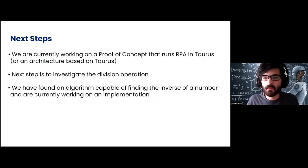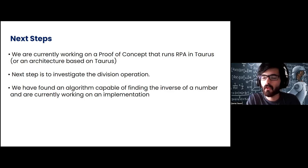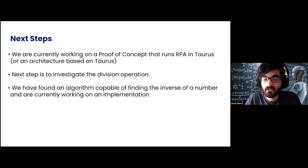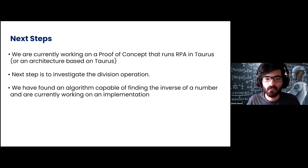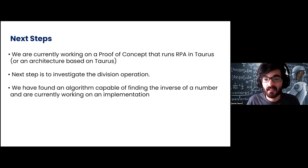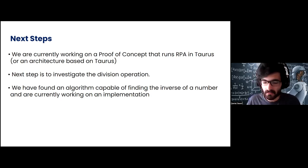As for next steps, we are currently working on a proof of concept that runs the Russian peasant algorithm in Taurus — and not only in Taurus, but possibly on a new kind of architecture based on Taurus and the MapReduce abstraction. We also want to investigate the division operation: as we have said, division is just a multiplication by the inverse of one of the operands. We have already found an algorithm capable of computing the inverse of a number, and we are working on an implementation in both Taurus and Tofino to see how far we can push the size of the finite fields.